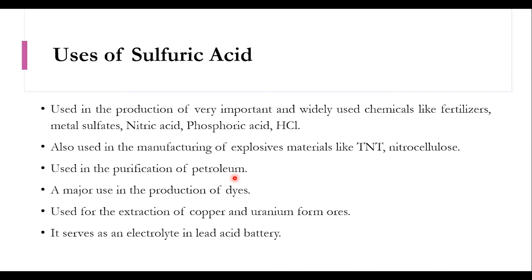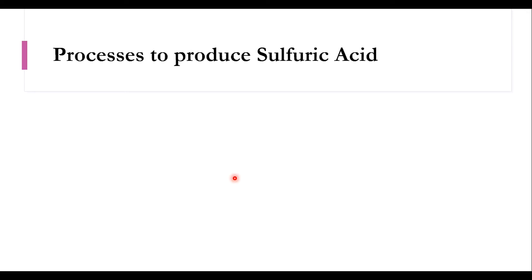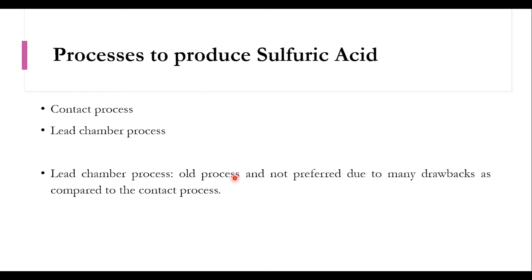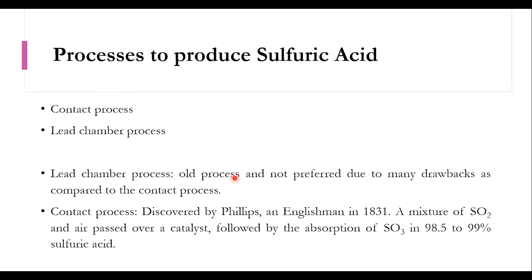Now we will move towards the processes used to produce sulfuric acid. There are two types: the contact process and the lead chamber process. The lead chamber process is old and not preferred due to various disadvantages. The contact process was discovered by Phillips, an Englishman, in 1831. A mixture of SO2 and air is passed over a catalyst, followed by the absorption of SO3 in 98.5 to 99% sulfuric acid. We will now discuss the contact process in detail.